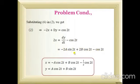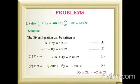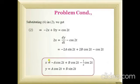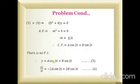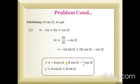So the final solutions are: x = −A sin 2t + B cos 2t − (1/2)cos 2t and y = A cos 2t + B sin 2t. These are the x and y values that form the complete solution of the given simultaneous linear differential equations.